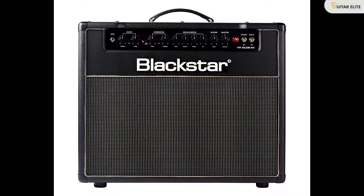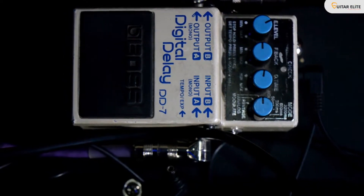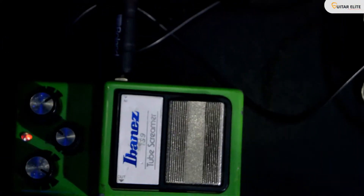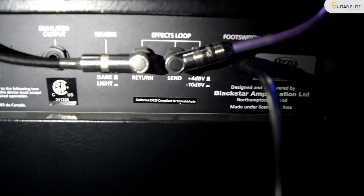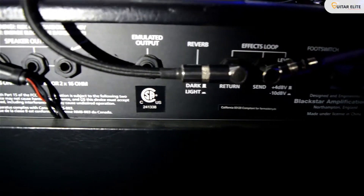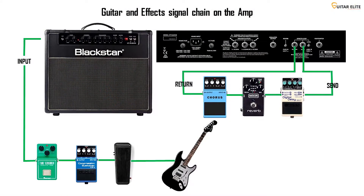Usually we can find that amps have two or three channels: a clean channel, a crunch channel, and a lead channel. For this particular case, I'm using a Blackstar HT Club 40 with a Boss DD7 delay on the loop effects and an Ibanez Tube Screamer in front of the amp. The loop effects on the amp help us to handle the signal chain of the distortion section of the amp, by putting effects like delay, chorus, and flanger connected to the loop effects right after the distortion section.